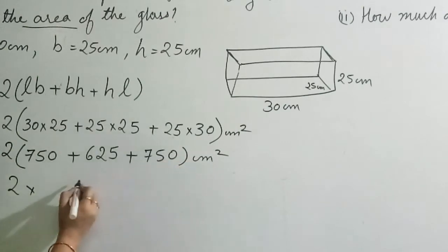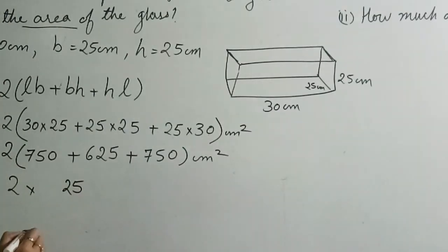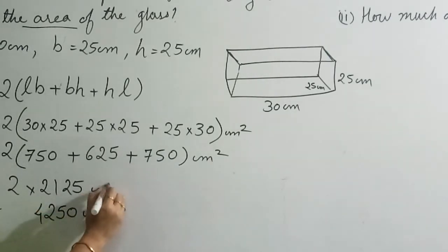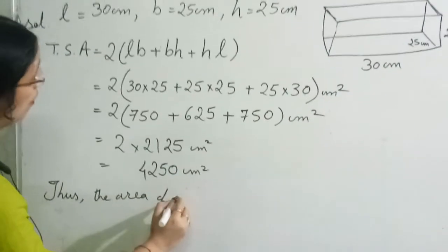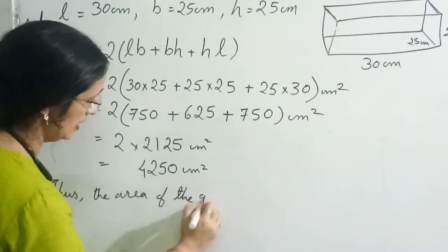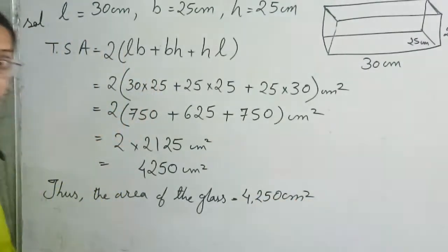So what we will add: 5 and 5 plus 5 is 15, carry 1. Then 7 plus 2 plus 7 is 16 plus 1 is 17, carry 1. Then 7 plus 6 plus 7 is 20 plus 1 is 21. So the area of the glass is equal to 2250 cm square. Clear?